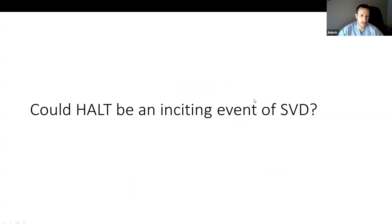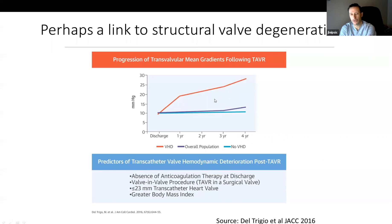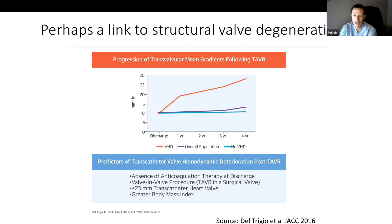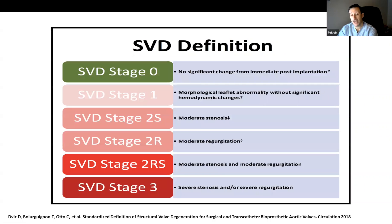What we really need to understand as a field is whether HALT may be an inciting event for structural valve degeneration. Data from the Quebec group shows that roughly five percent of patients experience early valve degeneration post-TAVR at one year, with predictors including absence of anticoagulation, valve-in-valve, and small transcatheter heart valve. Definitions of structural valve degeneration and bioprosthetic valve failure have been refined by multiple groups, including Danny Dvir from Jerusalem, who provided echo-based staging criteria along with many others.